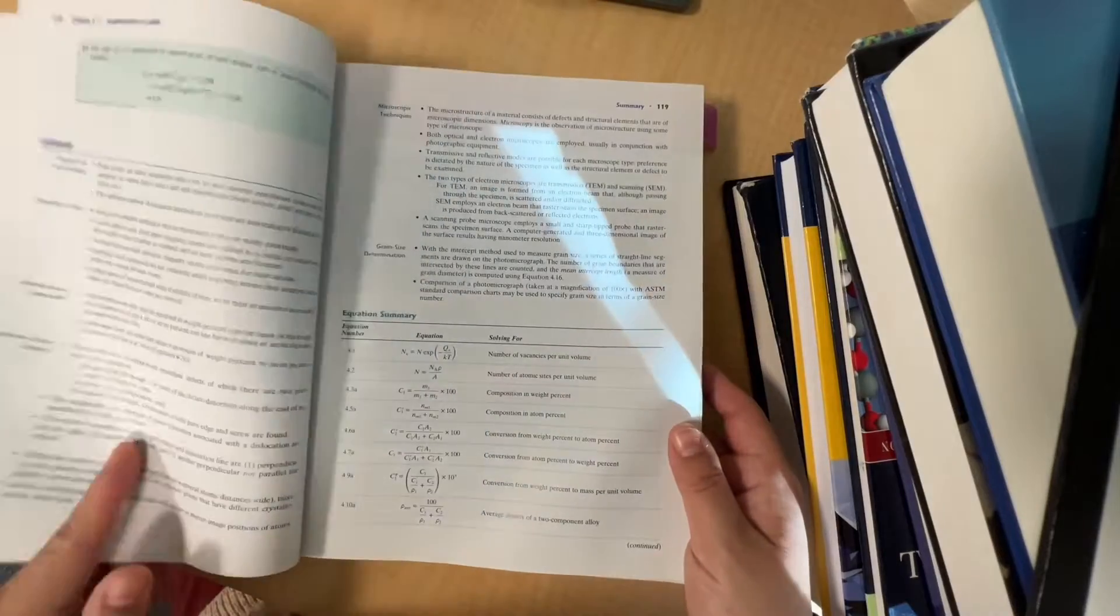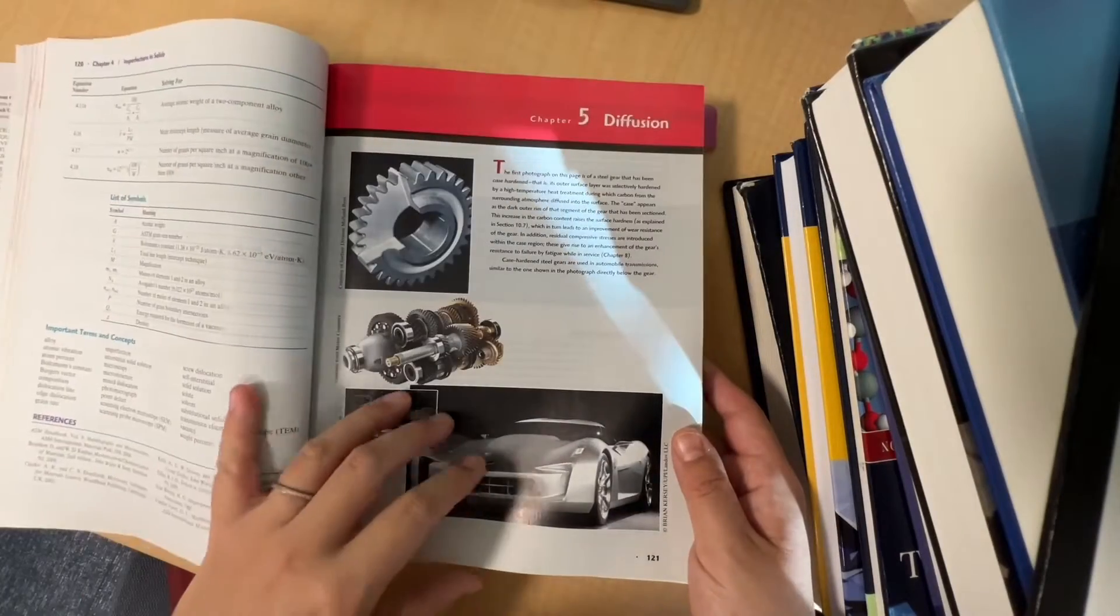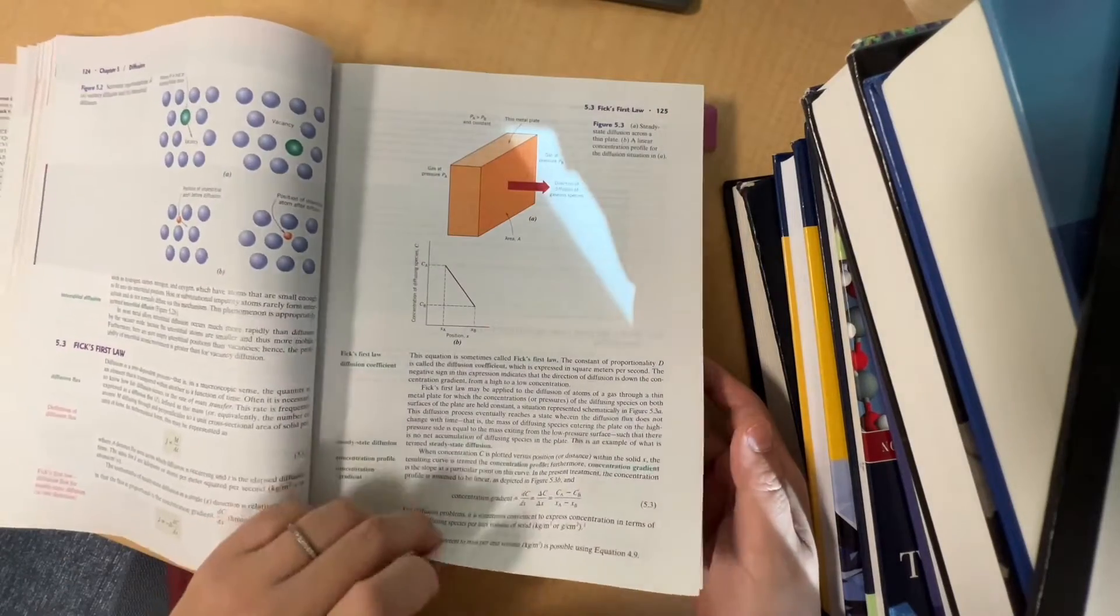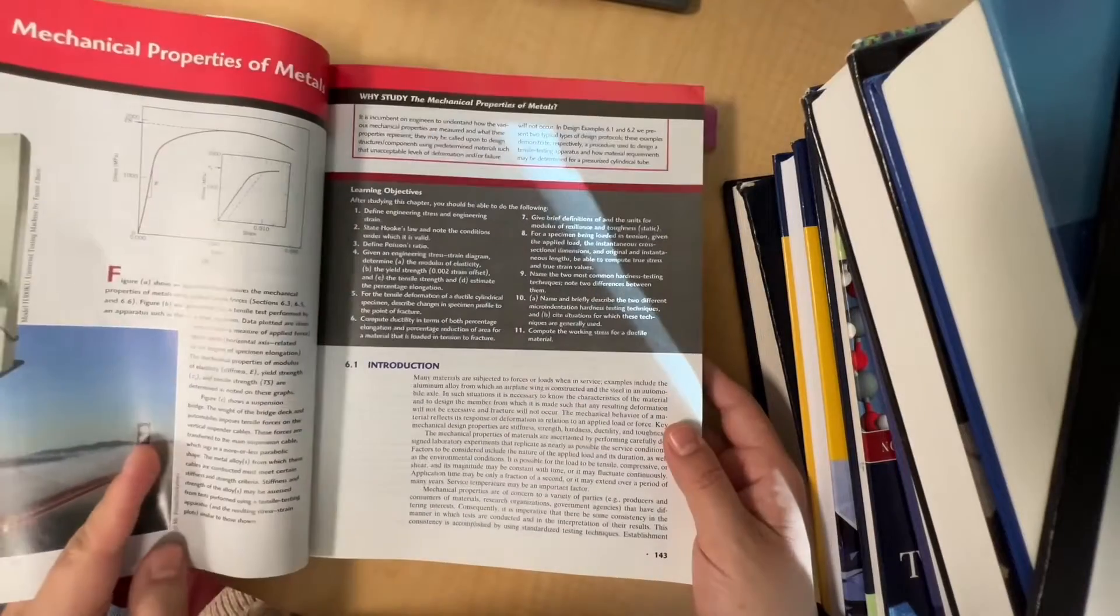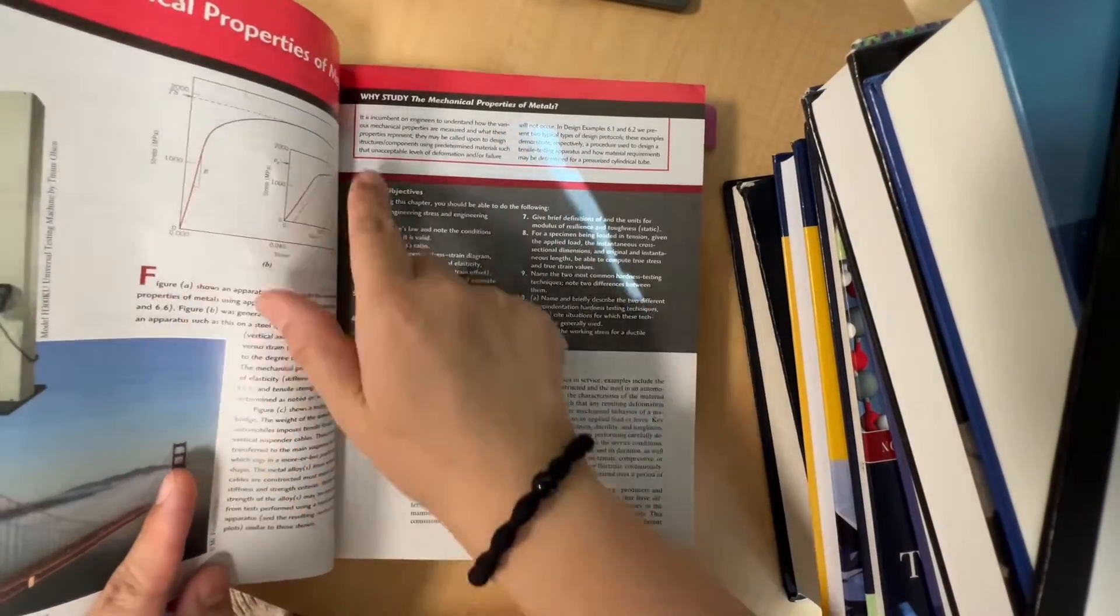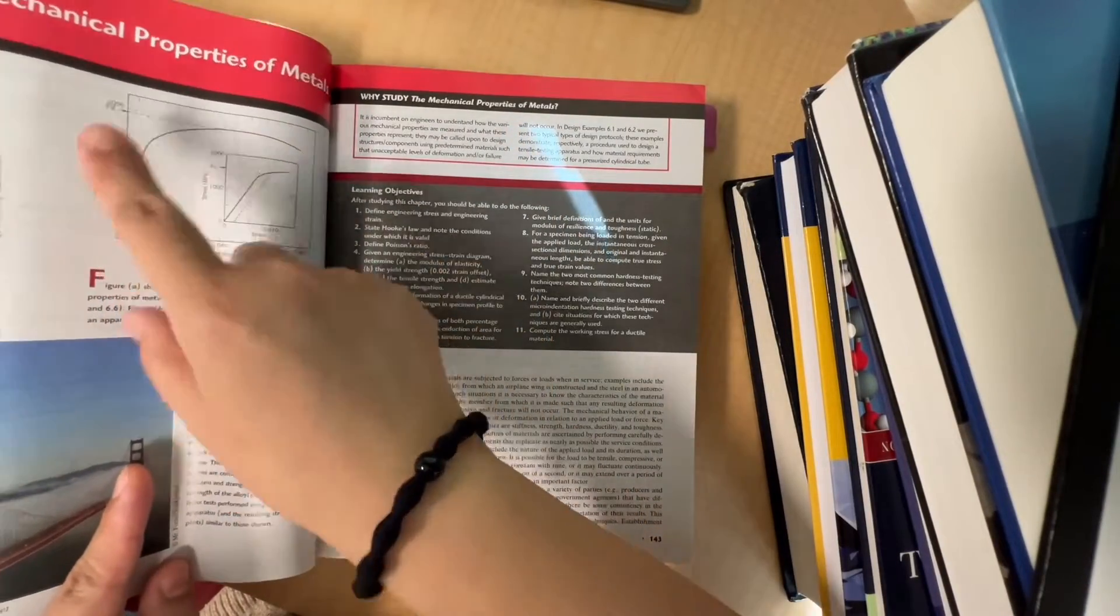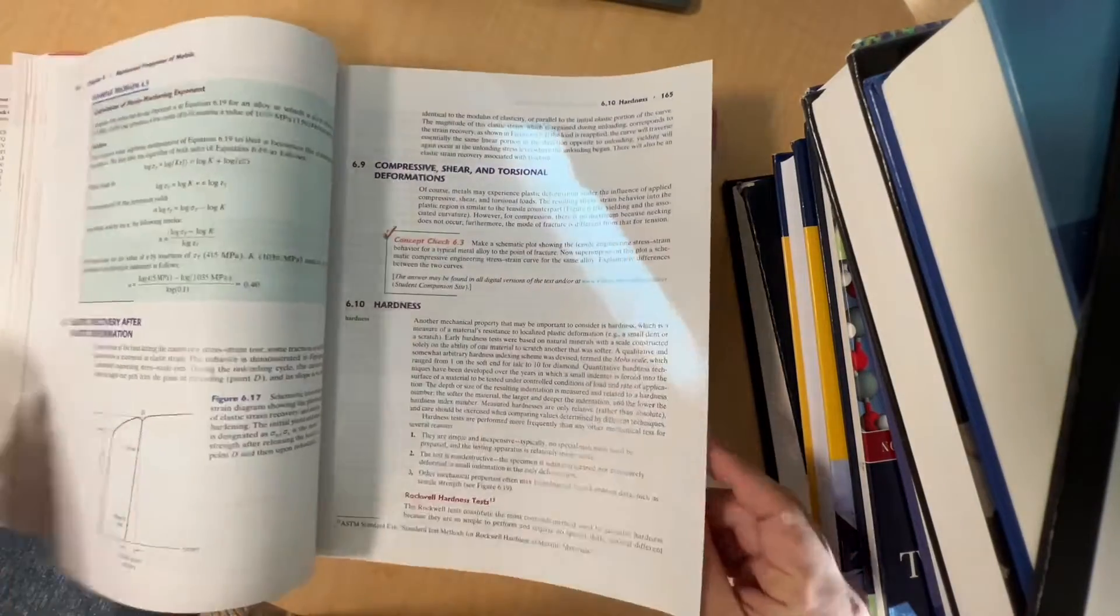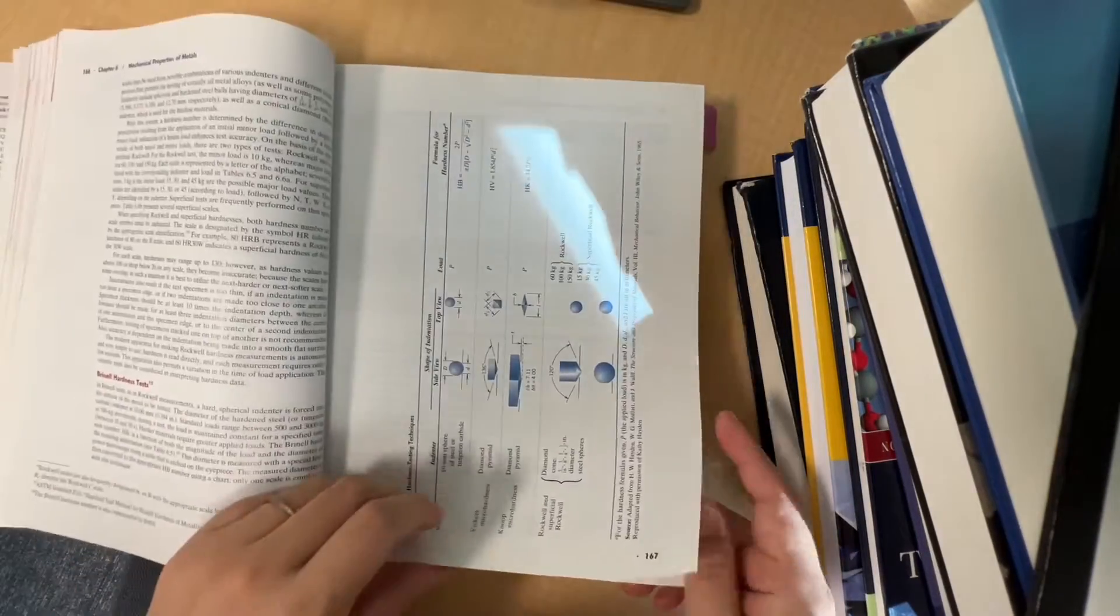It tells you how to determine the different types of defects, from point to line to area to volumetric defects. Diffusion, very useful for materials processing, the mathematical equations, Fick's first law, Fick's second law. Mechanical properties—this chapter talks about everything: what is stress, what is strain, how to measure stress-strain curves. In addition to that, there's the hardness test.